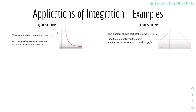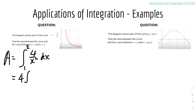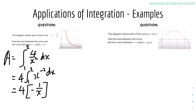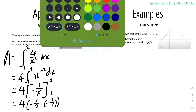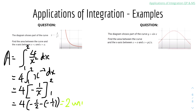Question 1: the diagram shows part of the curve y equals 4 over x squared. Find the area between the curve and the x-axis between x equals 1 and 2. We set up: area equals the integral of 4 over x squared dx from 1 to 2. Pulling the 4 out and rewriting as x to the power of minus 2: integrating gives minus 1 over x with limits 2 to 1. Evaluating: 4 times (minus 1 over 2 minus minus 1 over 1) gives an answer of 2 units squared.